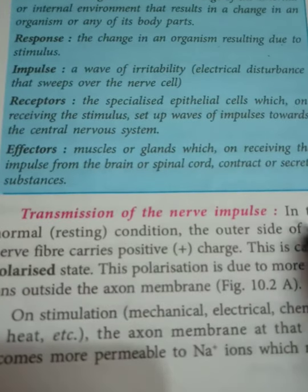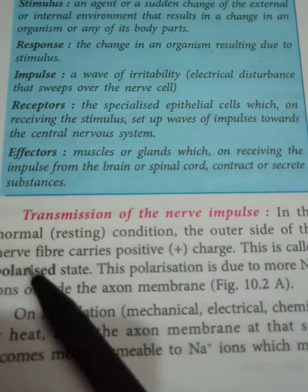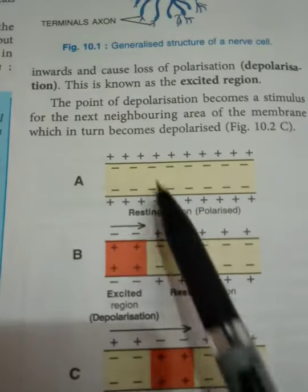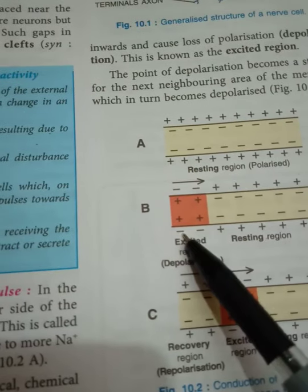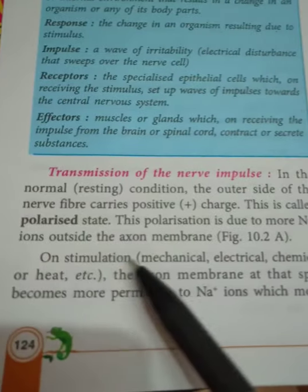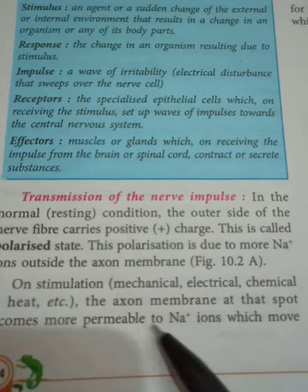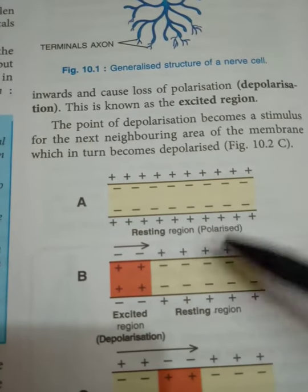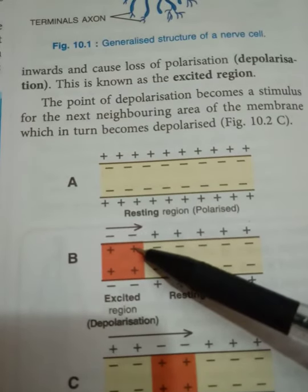Transmission of nerve impulse: in the normal condition, the outer side of the nerve fiber carries a positive charge — this is called the polarized state. This polarization is due to more sodium ions being outside the axon membrane. On stimulation — whether mechanical, electrical, chemical, or heat — the axon membrane at that spot becomes more permeable to sodium ions, which move inward and cause loss of polarization. This is the excited state, also called depolarization.